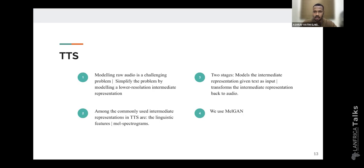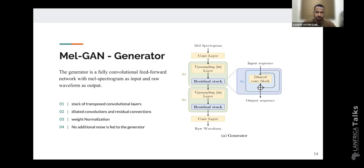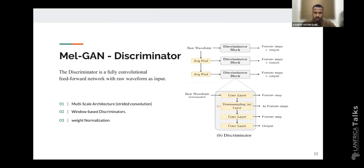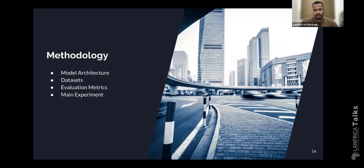A little bit about the MelGAN architecture. It is a generative adversarial network with a generator and discriminator. The generator is a fully convolutional network with mel-spectrogram as input and raw waveform as output. The discriminator is also a fully convolutional network. We have three discriminator blocks utilizing prior knowledge about the presence of structure at different timescales — each trying to distinguish features at different timescales. We use strided average pooling to downsample the audio from one timescale to another. At this point, we have all the components essential for this presentation to continue.